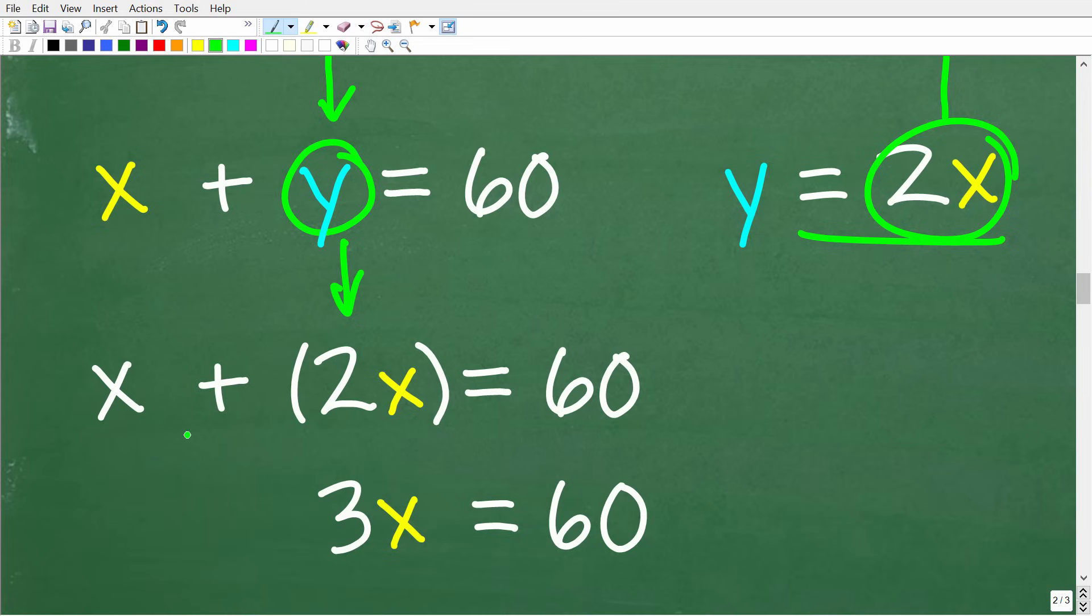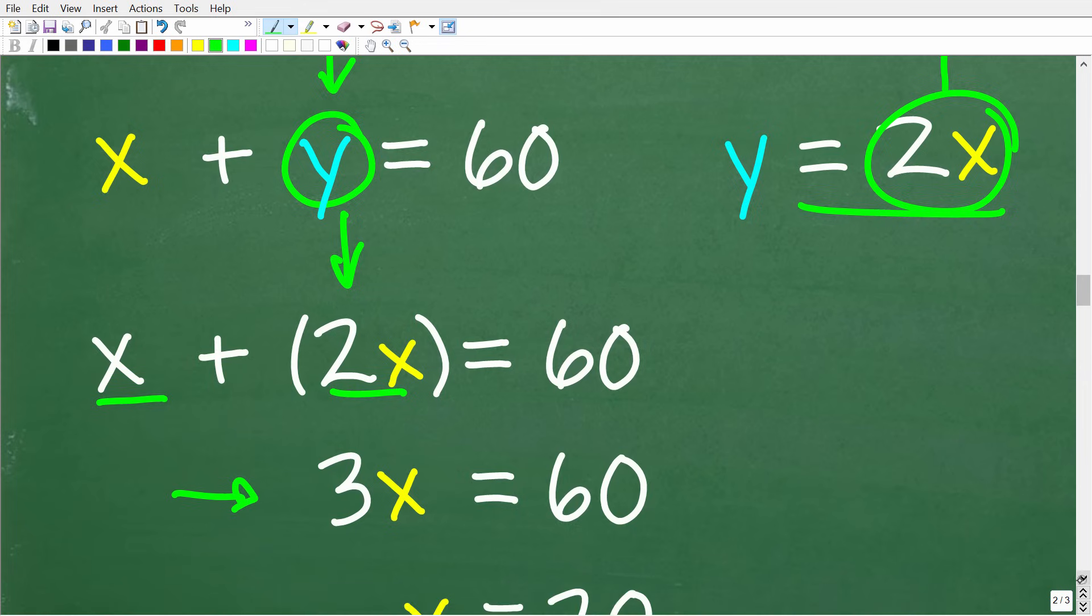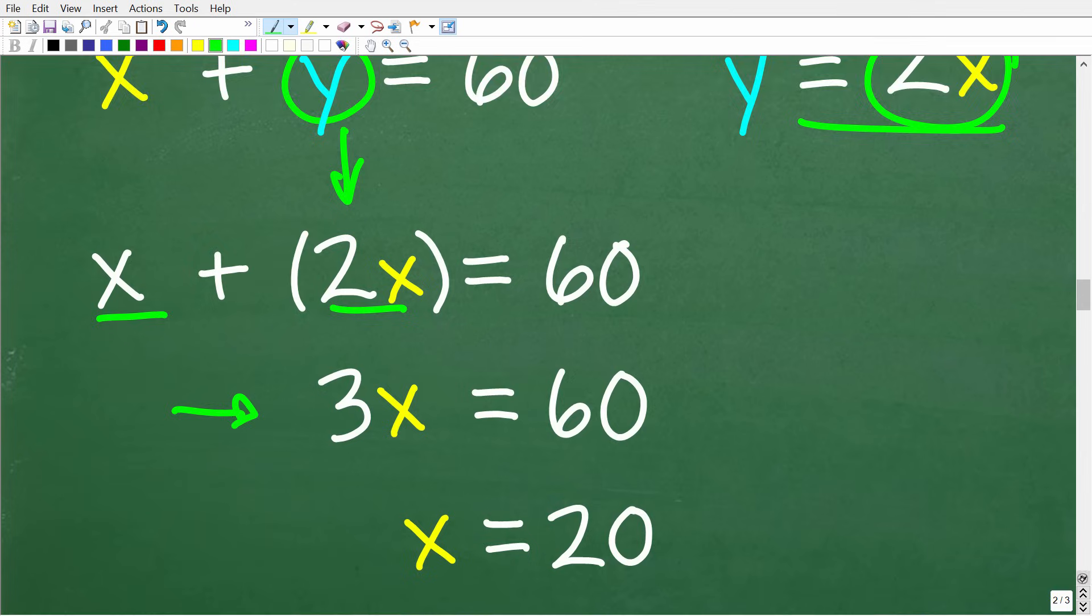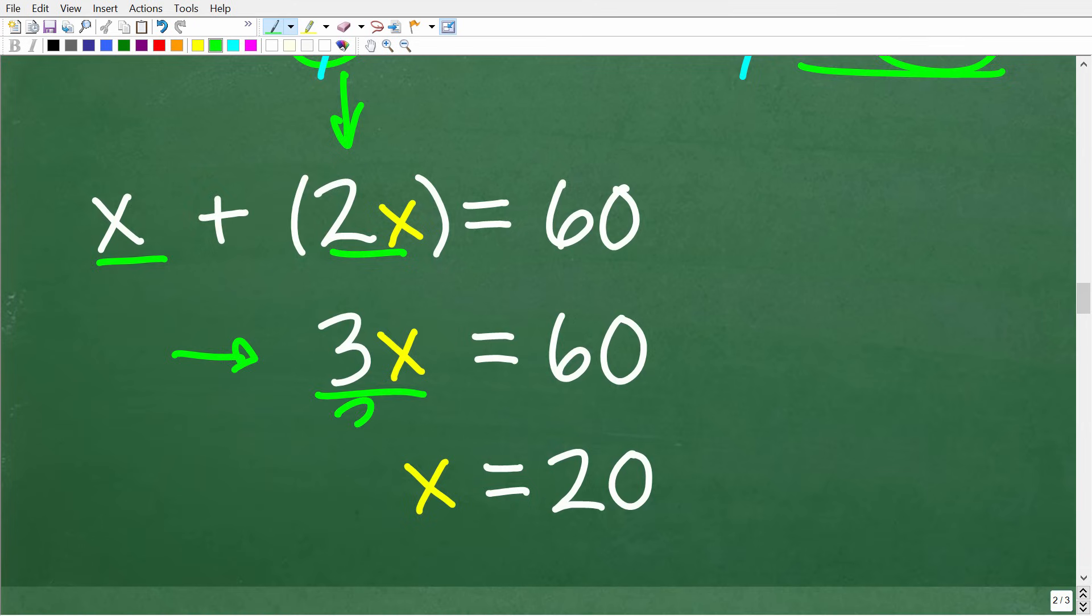We have X plus 2X is equal to 60. X plus 2X is 3X. So 3X is equal to 60. So to solve for X, all we have to do is divide both sides of the equation by 3. So 60 divided by 3 is 20. X is now equal to 20.